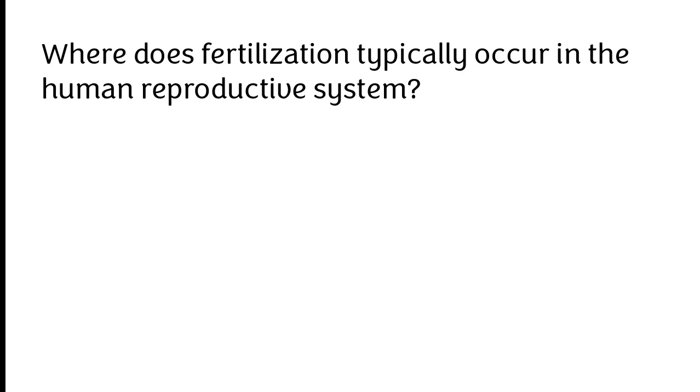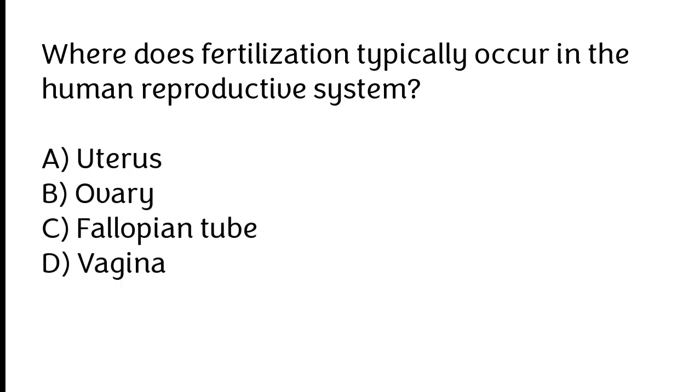Where does fertilization typically occur in the human reproductive system? Uterus, Ovary, Fallopian tube, Vagina. The correct answer is Option C. Fertilization typically occurs in the Fallopian tube of the human reproductive system.